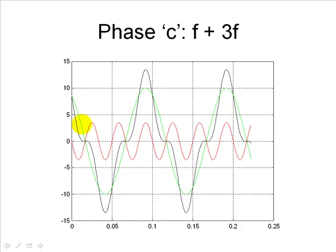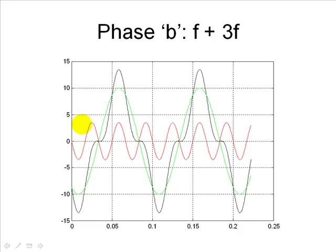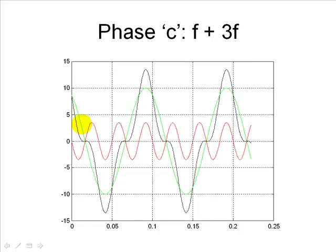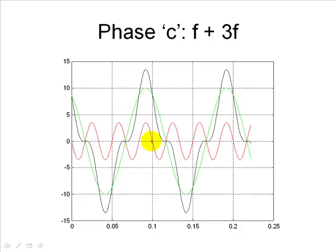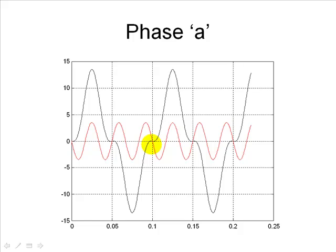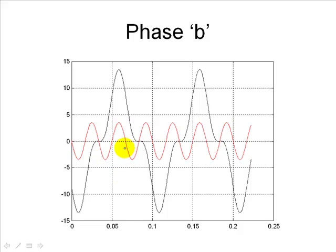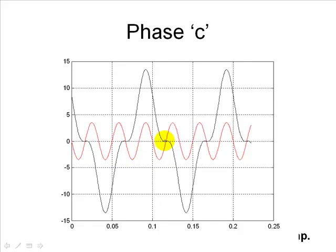But what happens with the triple frequency component of each one of the currents? Actually, the triple frequency component of phase A, of phase B, and of phase C have the same magnitude and the same phase. Interesting! Again, looking only at the triple frequency component for phase A, for phase B, and for phase C, those three currents have the same magnitude and the same phase.